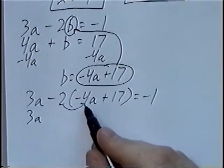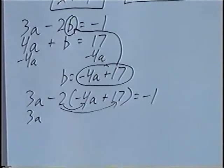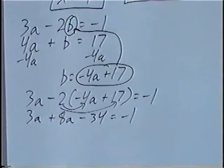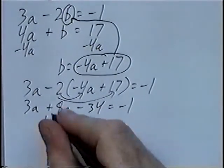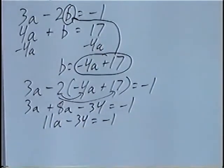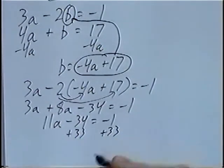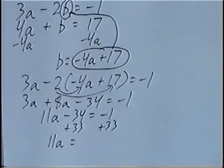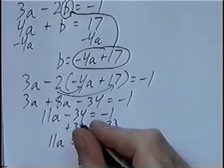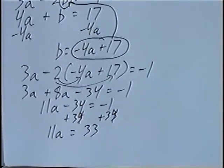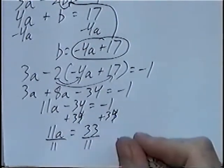Distributing the negative 2: negative 2 times negative 4 is positive 8a, and negative 2 times positive 17 is negative 34. Combining, 3a plus 8a is 11a, minus 34 equals negative 1. Adding 33 to both sides, 11a equals 33. Dividing by 11, a equals 3.